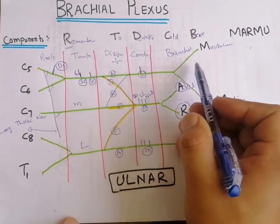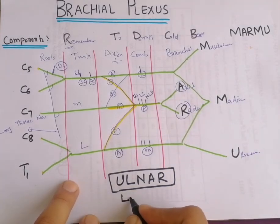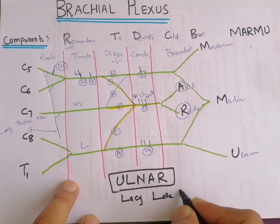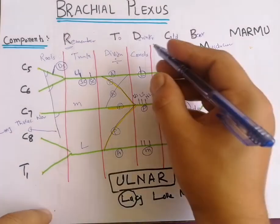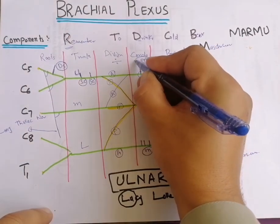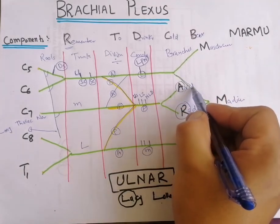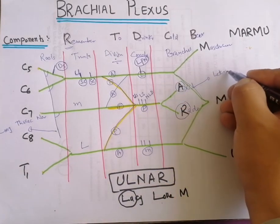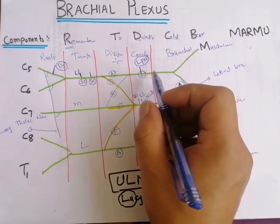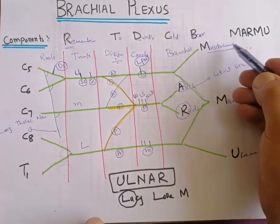The lateral cord gives three branches remembered with the mnemonic 'Lucy-Lau-Mi': the first L is lateral pectoral nerve, the second L is the lateral root of the median nerve (lateral branch of the median nerve), and M is the musculocutaneous nerve.